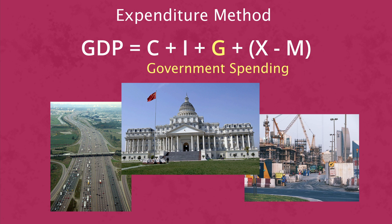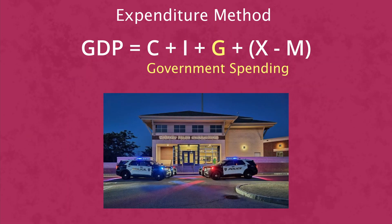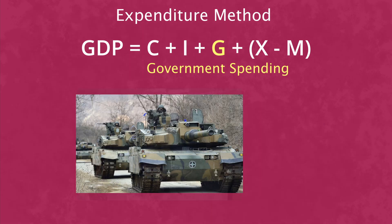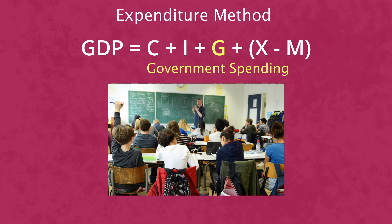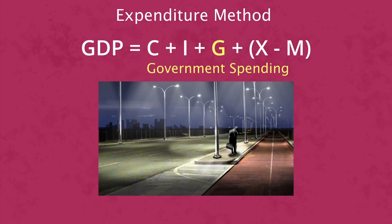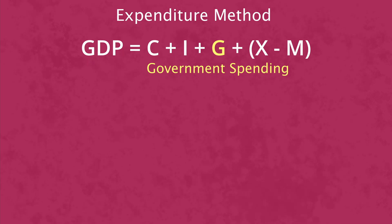G represents the government spending on goods and services. This would be the amount spent by governments for providing essential commodities, healthcare, infrastructure, education, and other necessities to citizens.